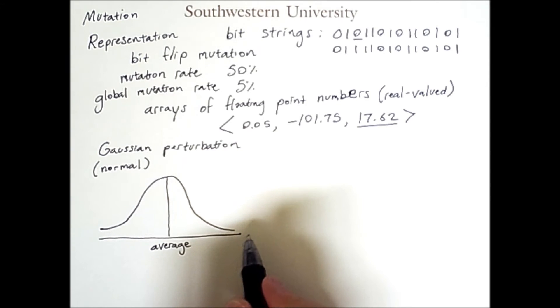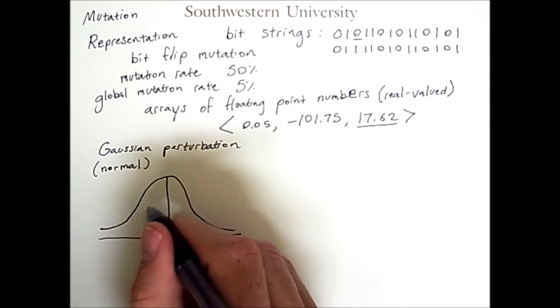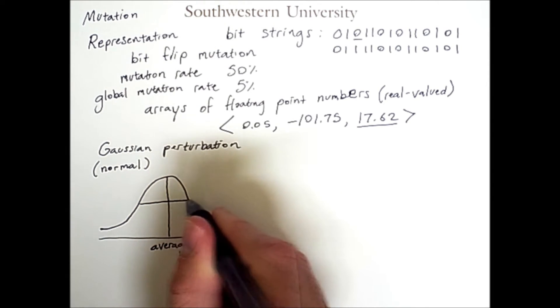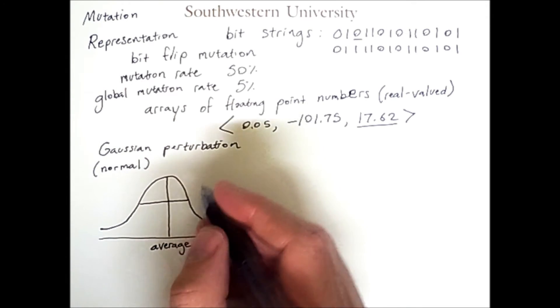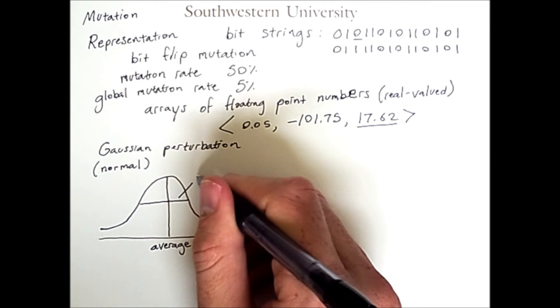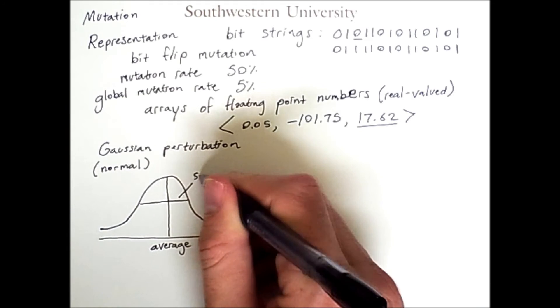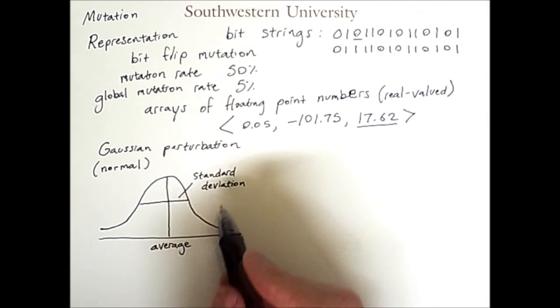So, values near the average are more likely to occur, whereas values far from the average in either direction are less likely to occur. However, the thickness of this bulge is measured by something known as standard deviation.